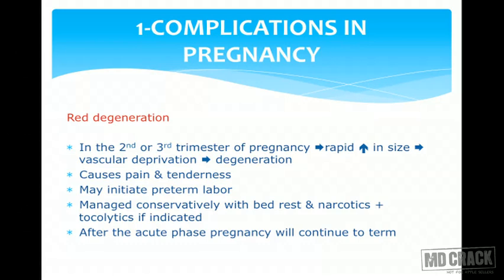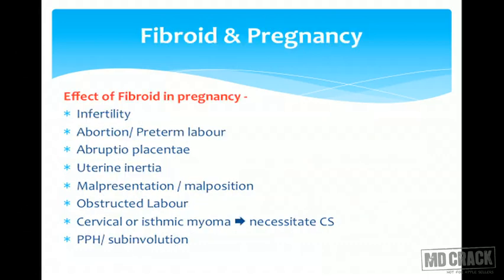We manage red degeneration conservatively with painkillers, and if she goes into preterm labor, tocolytics may be needed. After the acute phase of pain is over, pregnancy will continue till term. I want to insist on this point: the treatment for red degeneration is conservative management and no surgery is necessary.